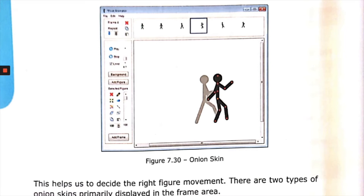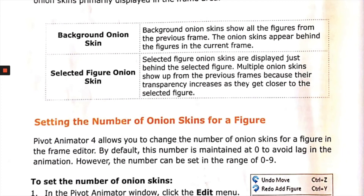There are two types of onion skins displayed in the frame area. Background onion skins show all the figures from the previous frame; they appear behind the figures in the current frame. Selected figure onion skin shows the onion skin just behind the selected figure — use this if you want only a particular character's onion skin. Multiple onion skins show up from previous frames, and their transparency increases as they get closer to the selected figure.